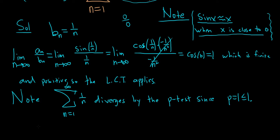our original series also diverges by the limit comparison test. So therefore, the sum from 1 to infinity of the sine of 1 over n diverges. It's a lot of writing by the LCT. Boom.